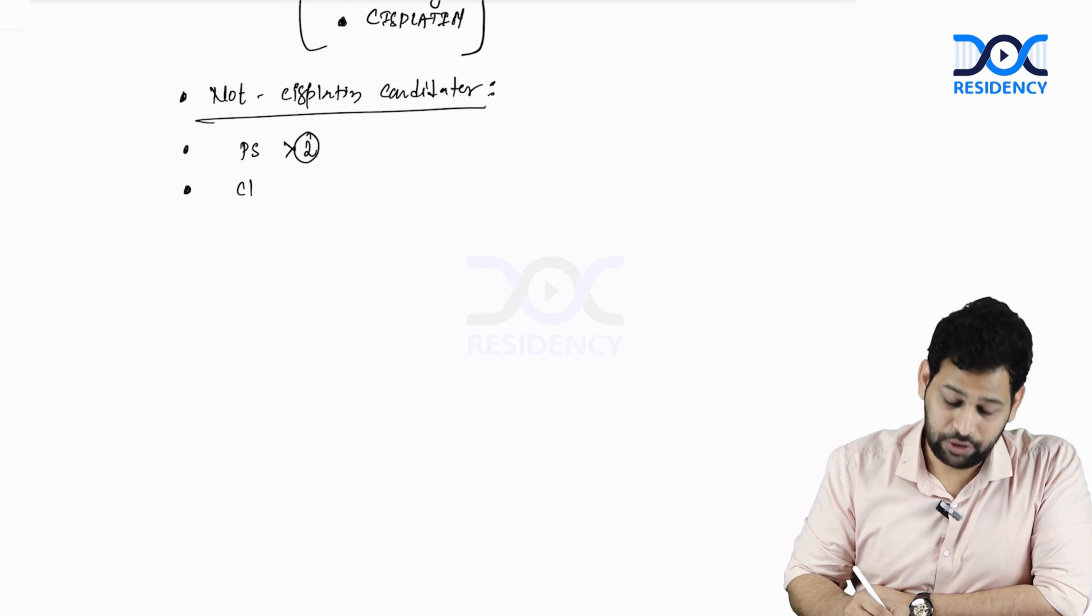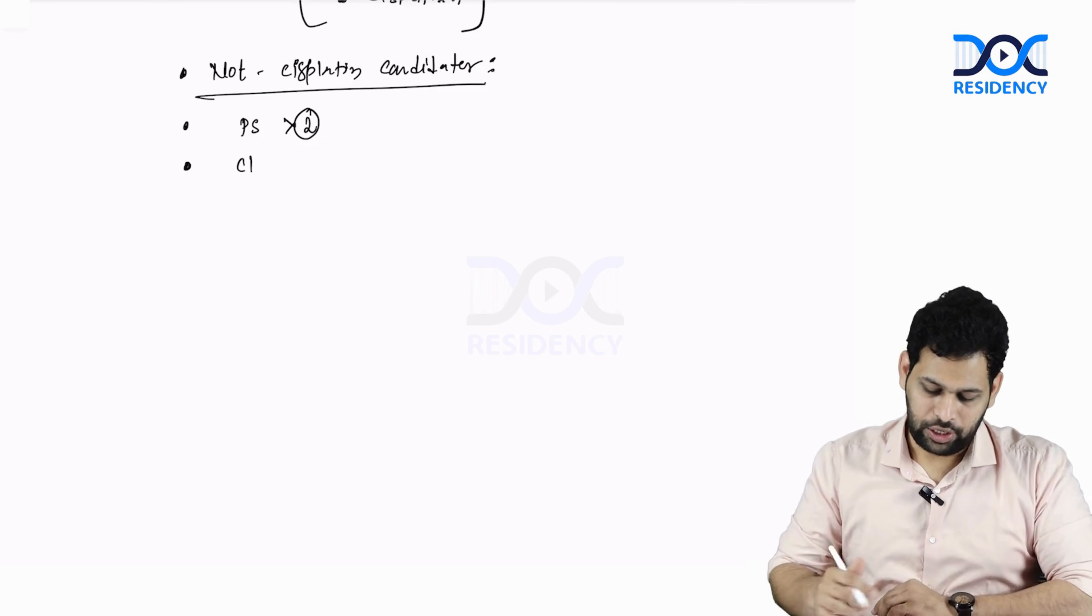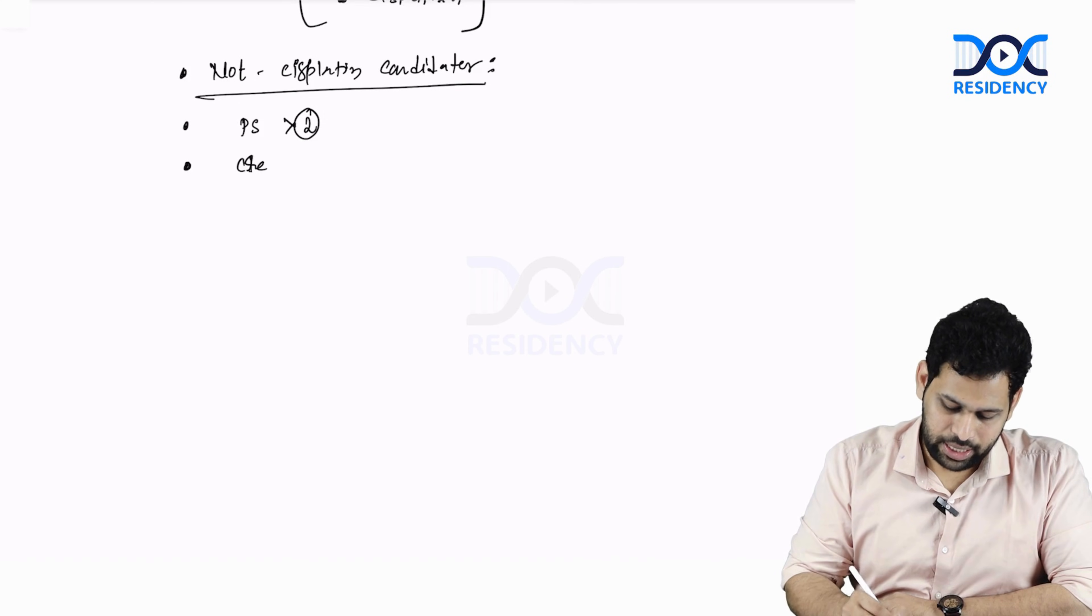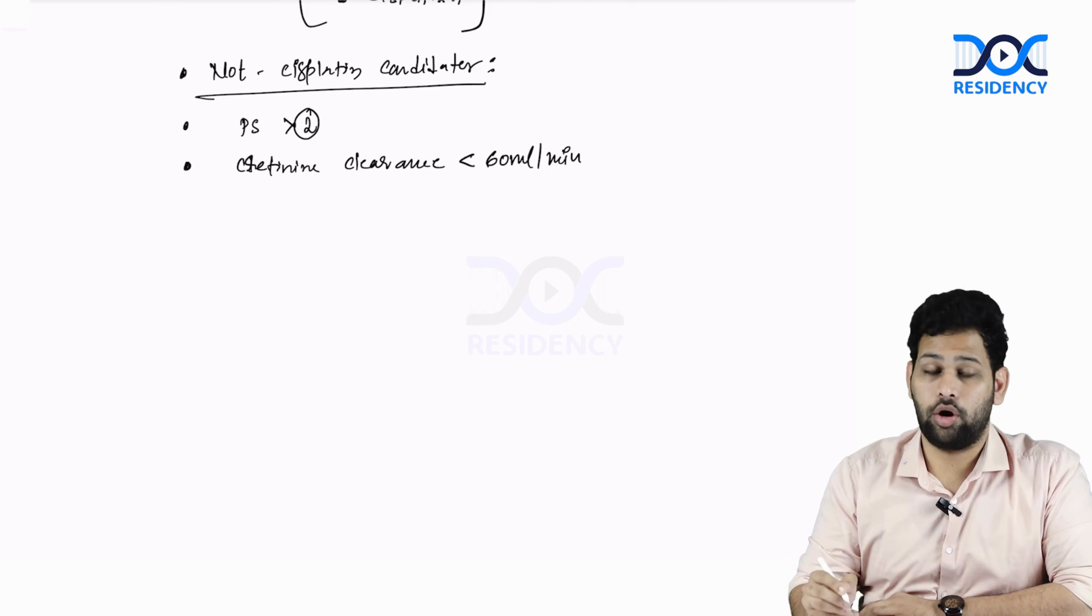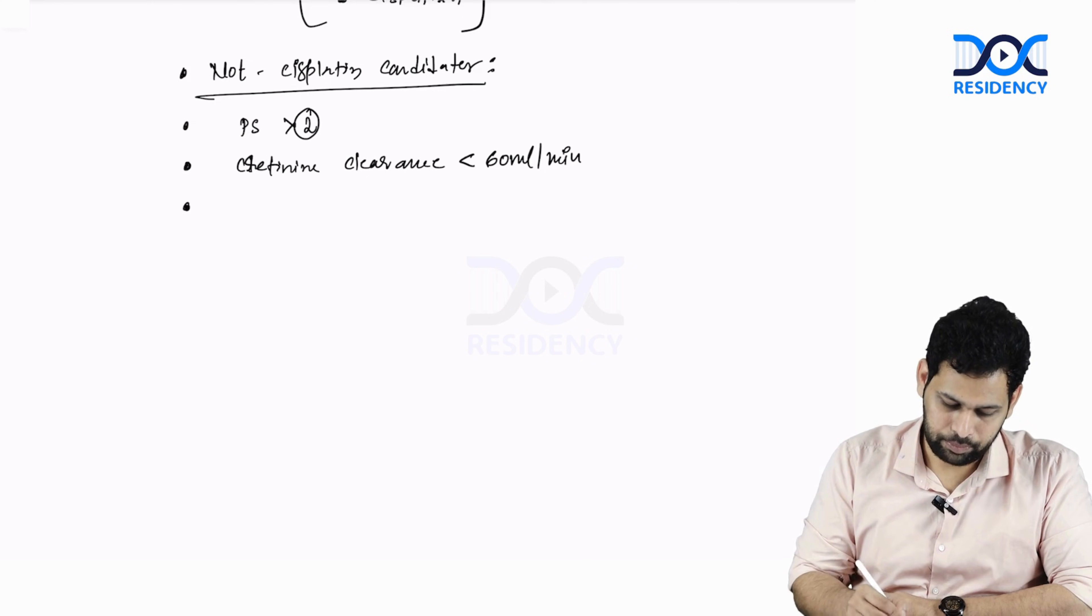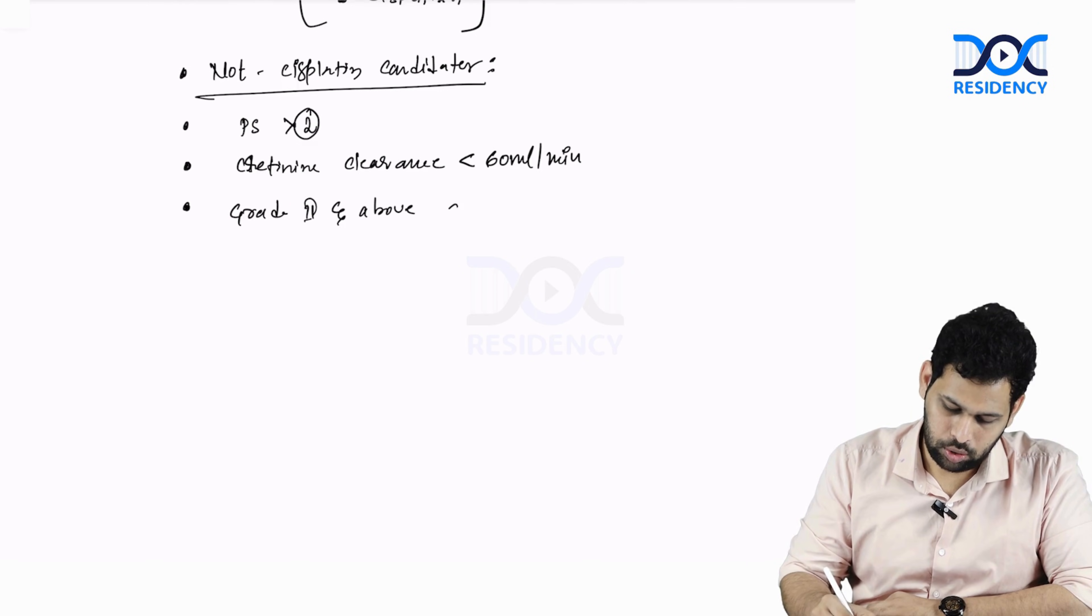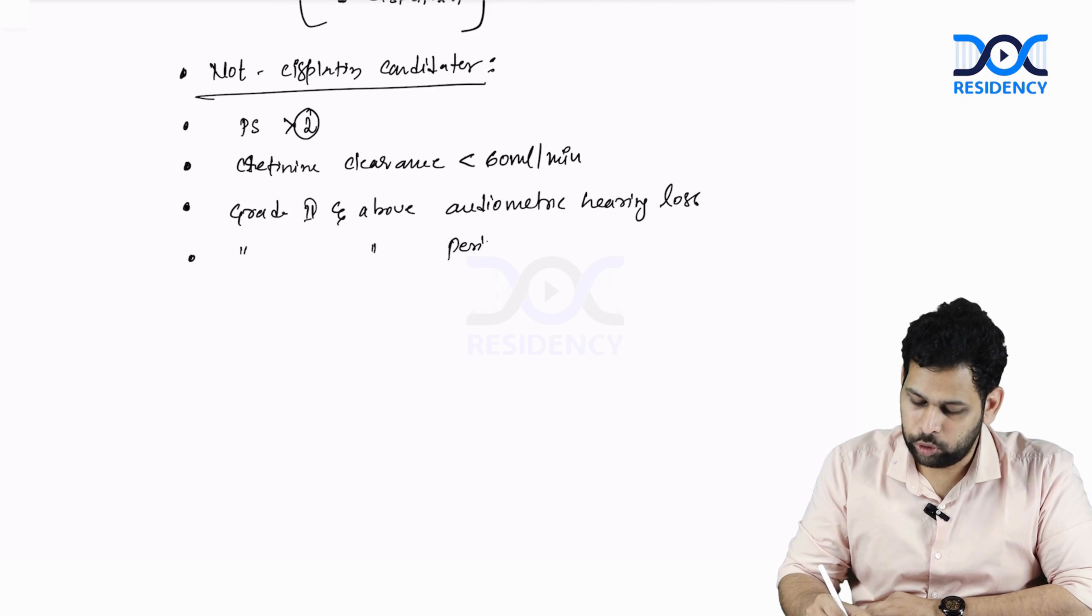If there is renal insufficiency and creatinine clearance is less than 60 ml per minute, that is also contraindication for cisplatin based therapy. Grade 2 and above audiometric hearing loss and grade 2 and above peripheral neuropathy are contraindications.